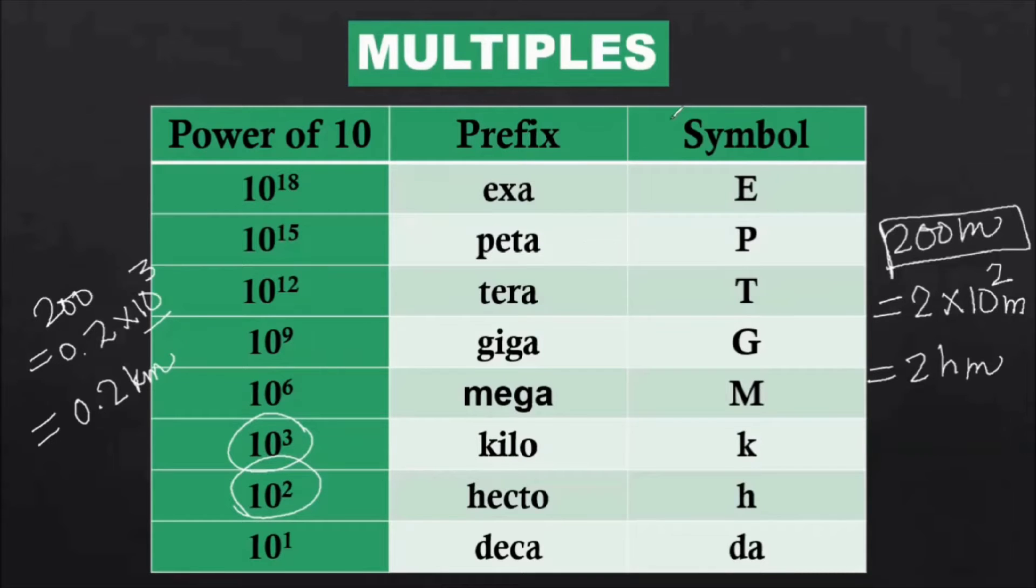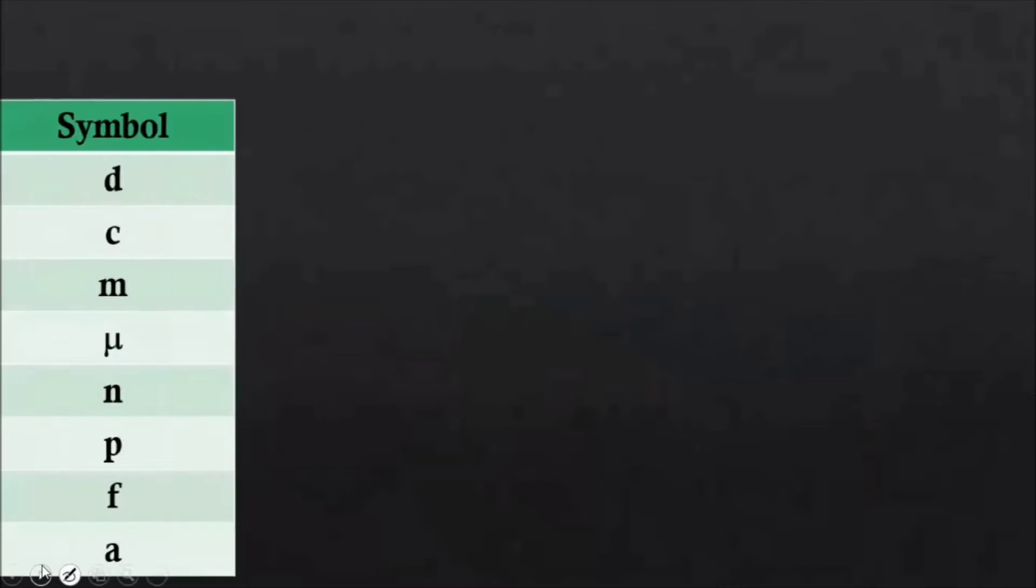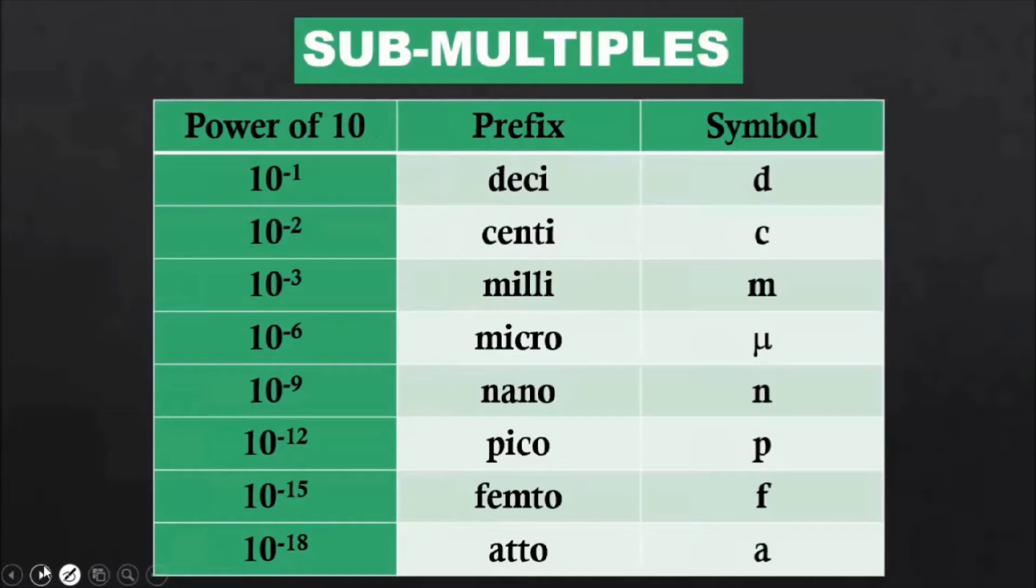So let's check submultiples. Let's go in the decreasing order. First of all, 10 power minus 1, it is called as deci, capital D. So in the earlier, you have seen 10 power 1, right? What was 10 power 1? So 10 power 1 was deka, and the symbol was da. And 10 power minus 1 is deci, the symbol is d. Do not get confused between these two.